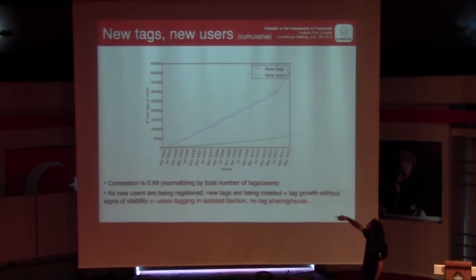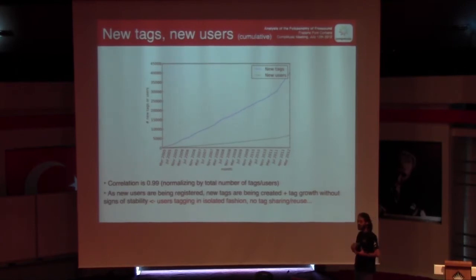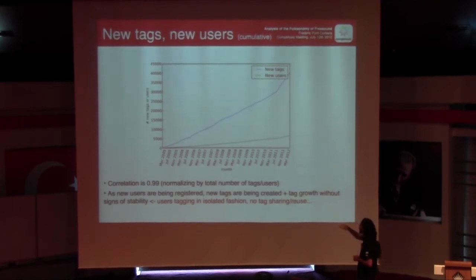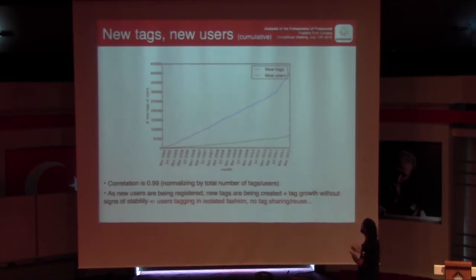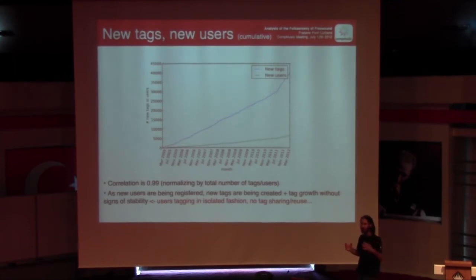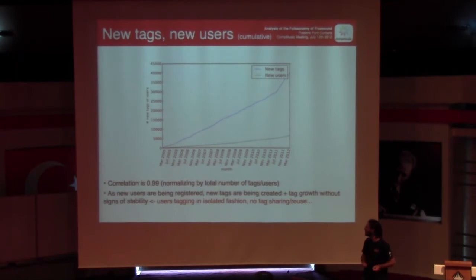Here we look at this same number cumulatively — keeping on adding the total number of tags — and we also plot the number of users who upload sounds and tag. We have a lot of users that are registered but do not upload; they just download other sounds. So these are only the ones contributing to the folksonomy. We computed the correlation and it's almost perfect. This means that new users being registered are using new tags that didn't exist before, which suggests that there is not really a reuse of tags across users.